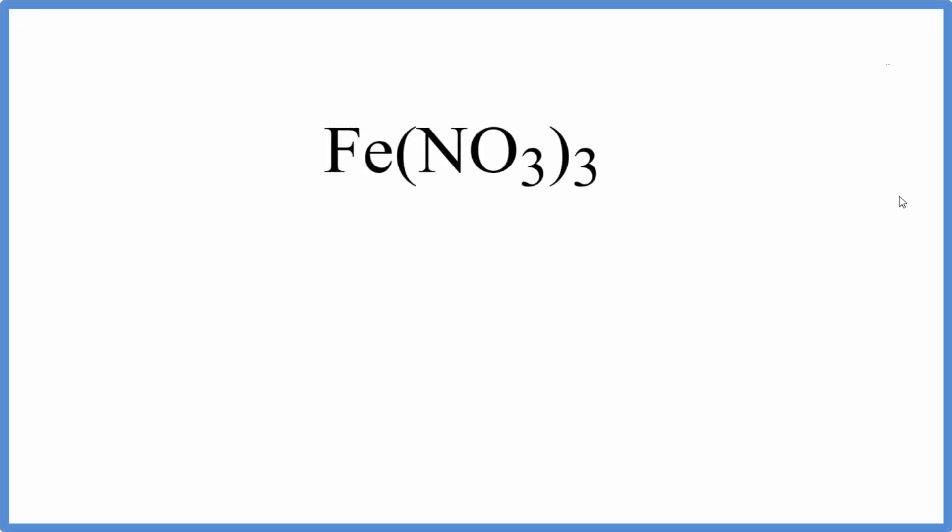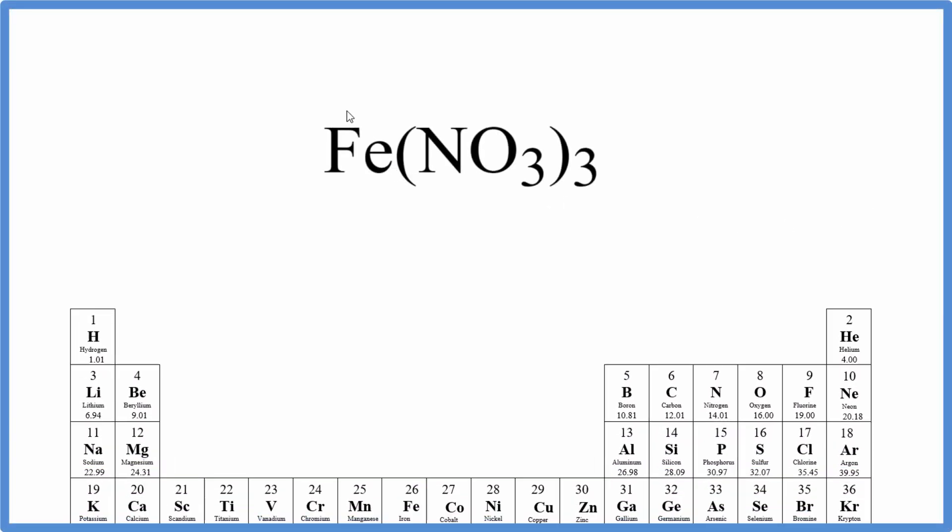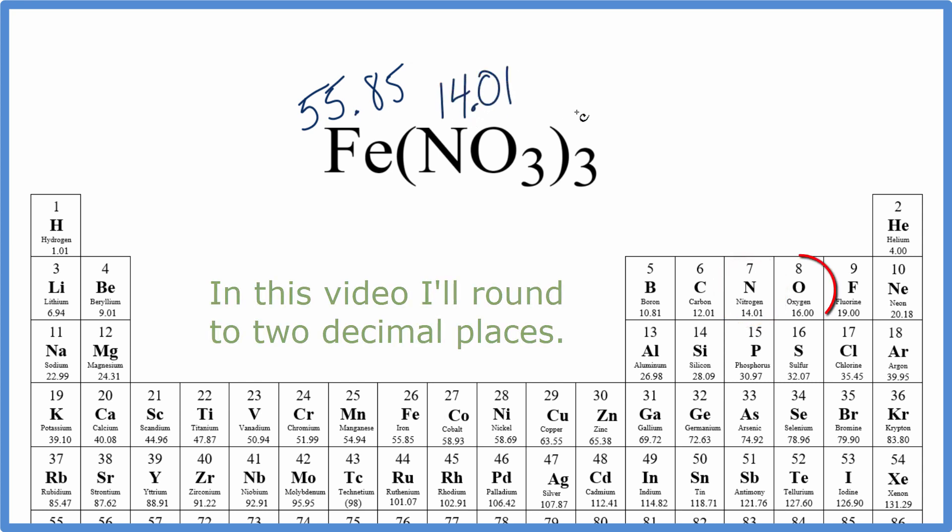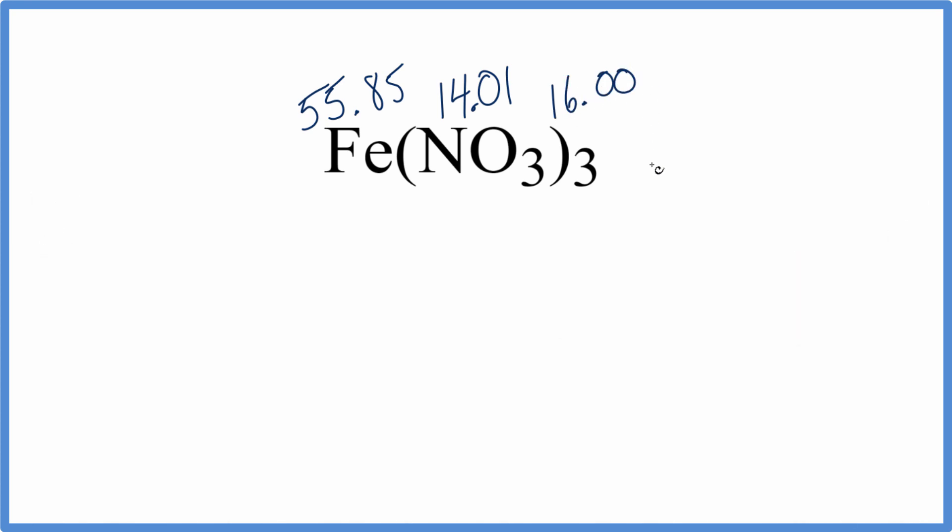For iron 3 nitrate, to find the molar mass or molecular weight, we go to the periodic table. Iron is 55.85 grams per mole, then nitrogen is 14.01 grams per mole, and oxygen is 16.00 grams per mole.